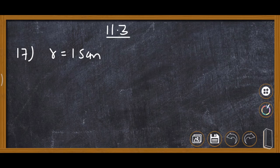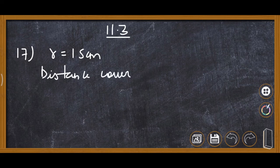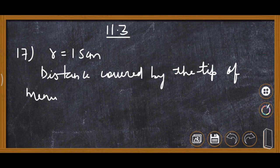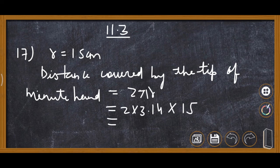In one hour the tip of the minute hand completes one rotation, so we find the distance covered by the tip of the minute hand. This equals 2 pi r, so 2 multiplied by 3.14 multiplied by 15 equals 94.2 centimeter.